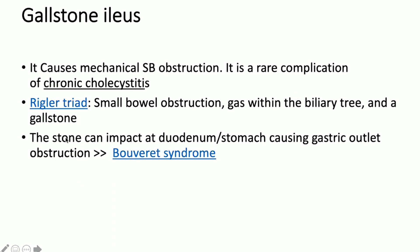The stone commonly impacts at the terminal ileum or distal ileal loop. Sometimes the fistula track may occur with the stomach or the first part of the duodenum, and the stone gets trapped at the gastroduodenal junction, causing proximal gastric outlet obstruction. In that scenario, we call it Bouveret syndrome.